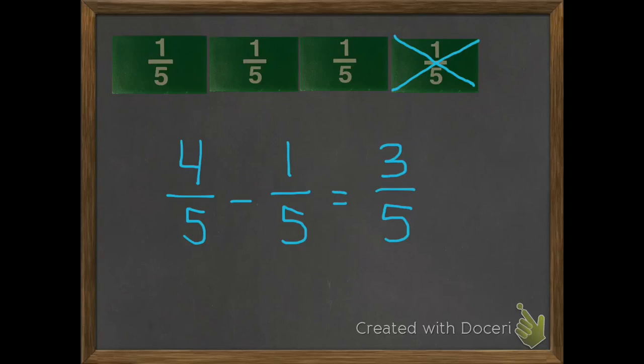I think you're ready to do these on your own now. So here we go. Question number 1 is 2 thirds subtract 1 third. Number 2: 4 sixths subtract 3 sixths.